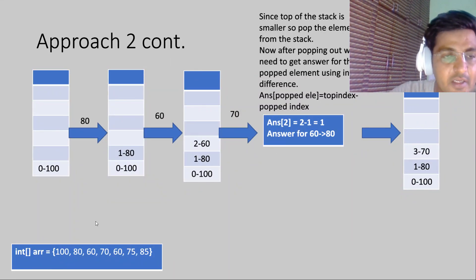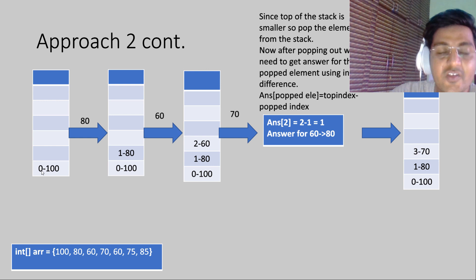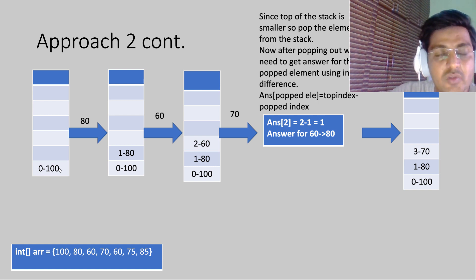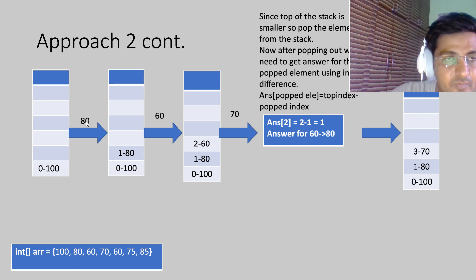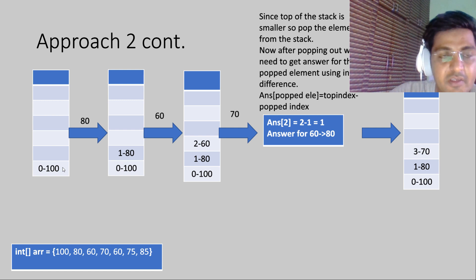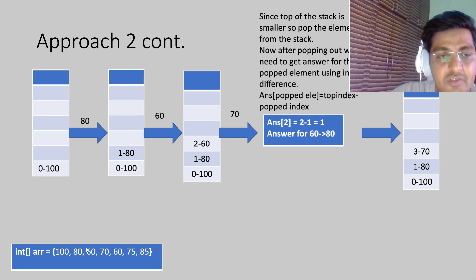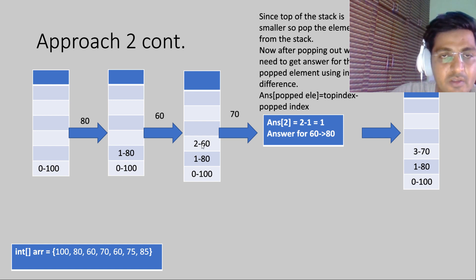Let's do a dry run on the array: 100, 80, 60, 70, 60, 75, 85. First, insert index 0 (100) into the stack. Next element is 80 — the top (100) is greater, so just insert index 1. Next element is 60 — smaller than 80, insert index 2. Now the stack has three elements: indices 0, 1, 2. Note: we store indices in the stack, not the actual values.